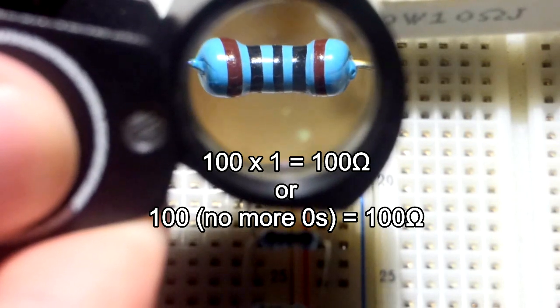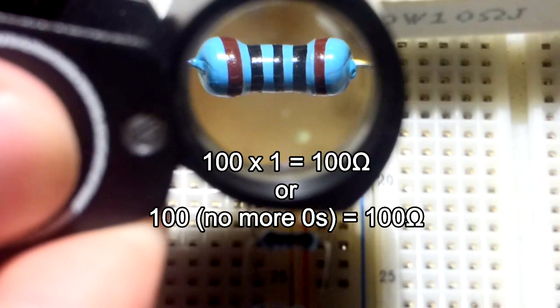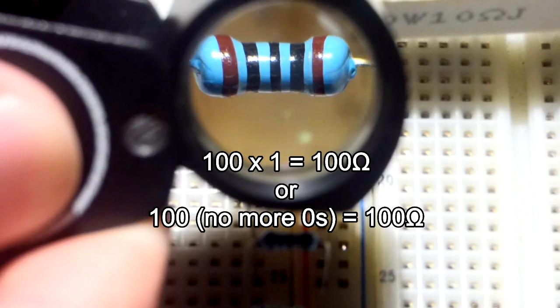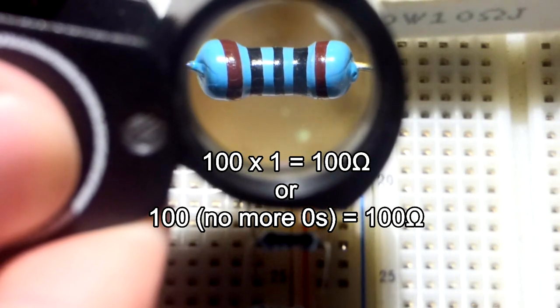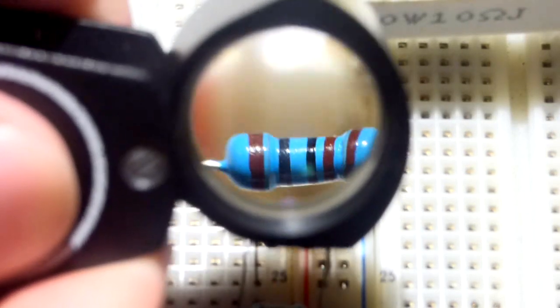and then again, the multiplier. But this time, and from now on, the multiplier is just the regular color code numbers. So that's 0 standing for 0, or you could think of it as a multiplier of 1. So 100 times 1 is 100.